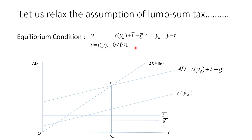Earlier we assumed that if your income is 100 rupees you were paying a constant amount, say 20 rupees; if your income increases to 200 rupees, you were still paying 20 rupees — whatever your income, your tax liability was 20 rupees. So the tax function was like a horizontal line. But now the tax function is upward-rising — if you draw it, it has a slope of T-prime, say 0.2.